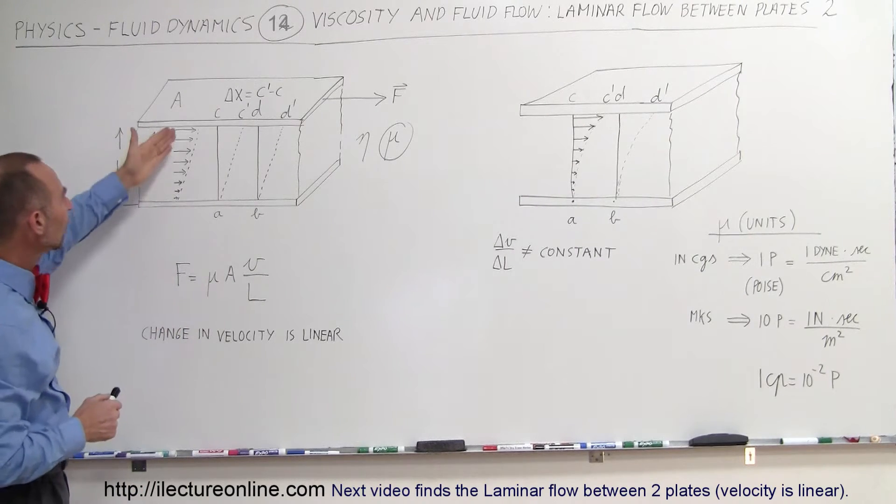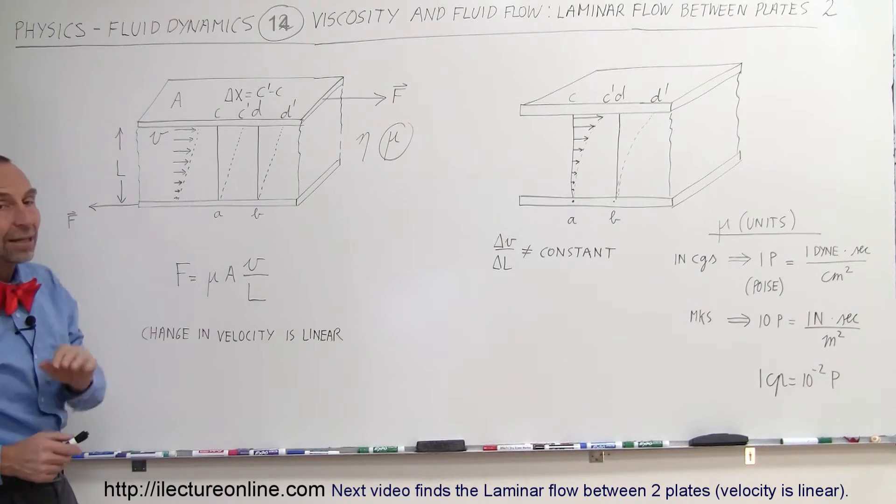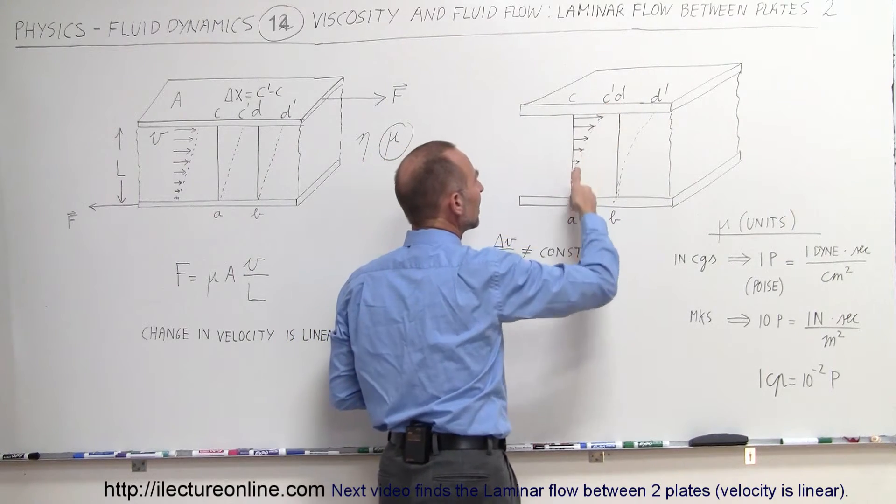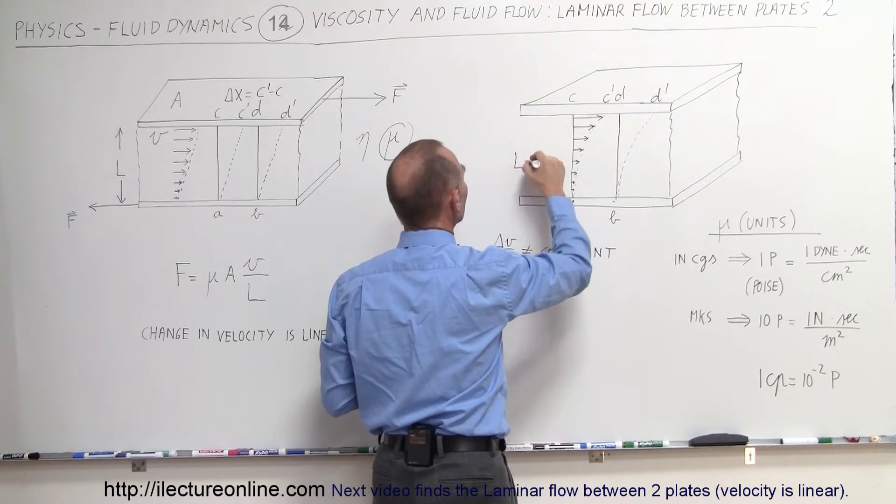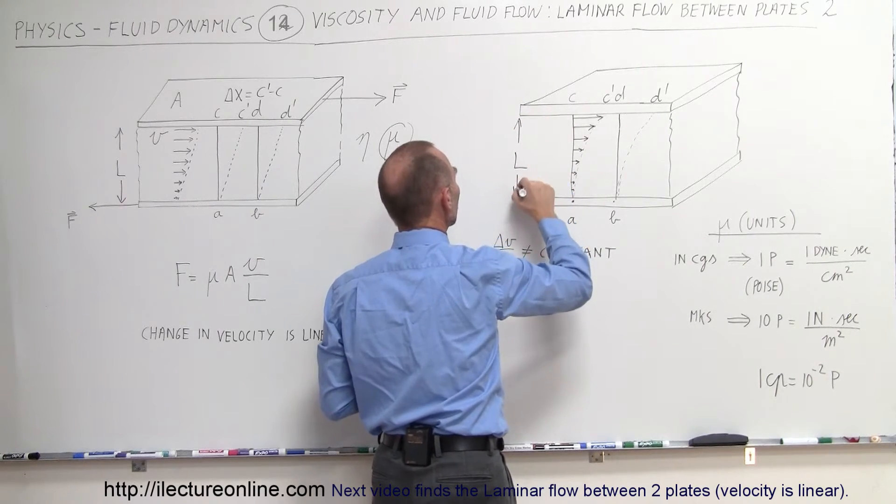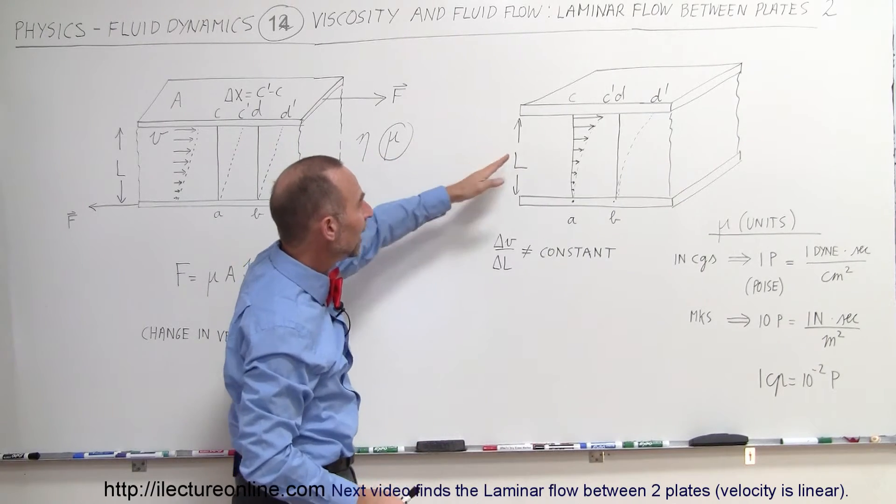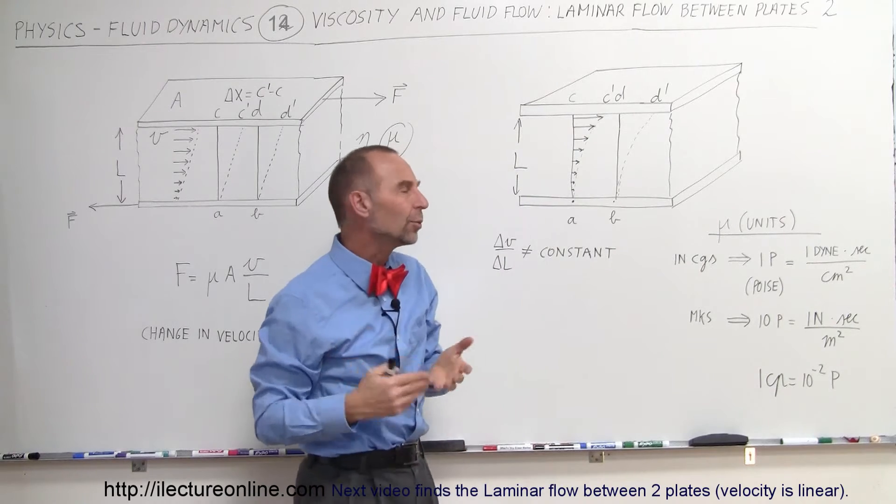But what if the fluid does not change velocity in the linear sense? On the right here I've drawn a new situation where you can see that the relationship between the velocity as a function of height, where l is still the distance between the two plates, shows that the velocity does not change linearly. So how do you deal with the equation then?